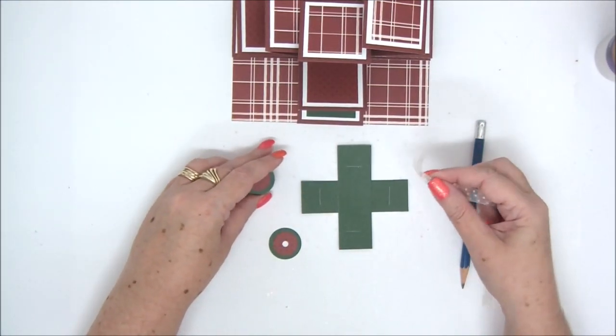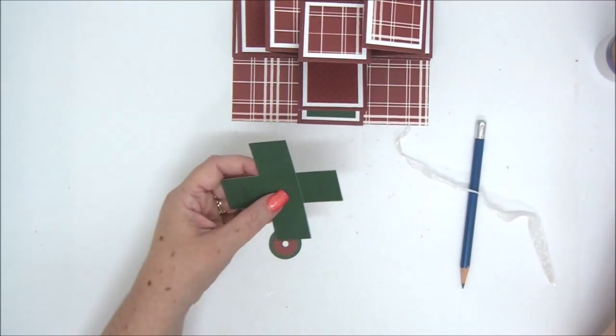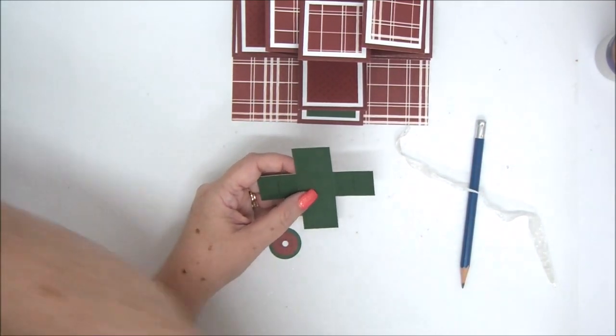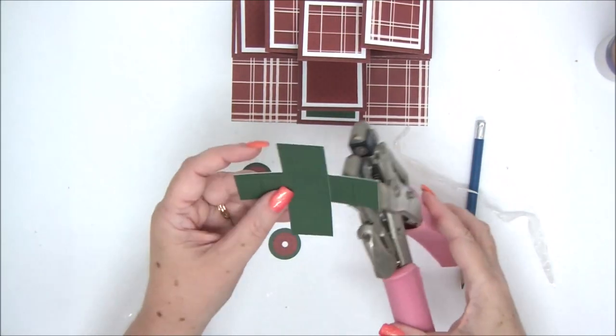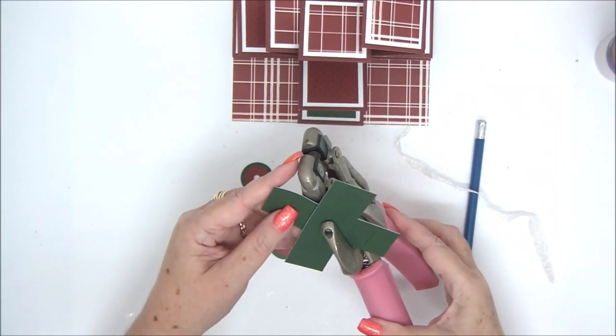You take a piece of ribbon to insert in the hole. You also need to punch the center of the cross.